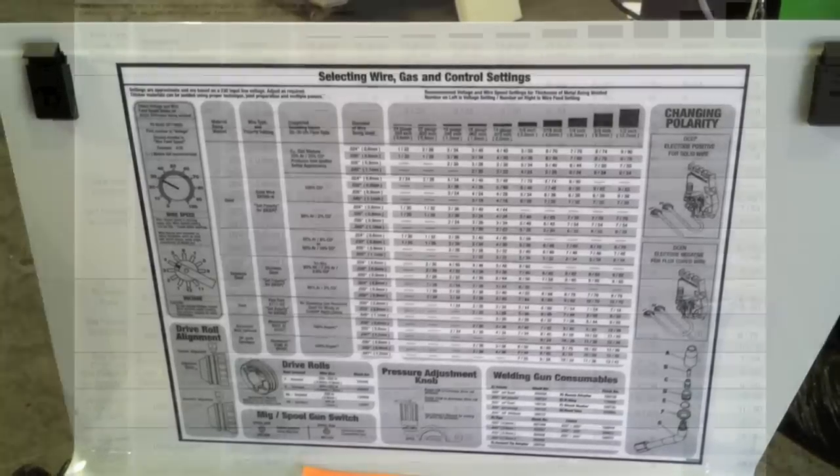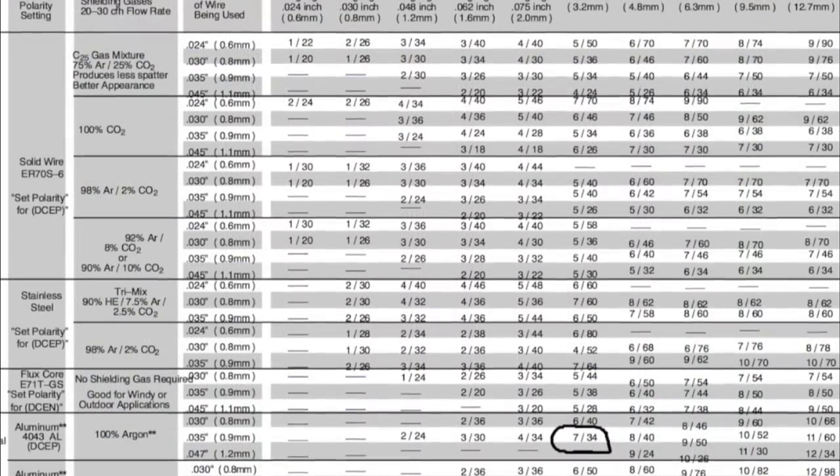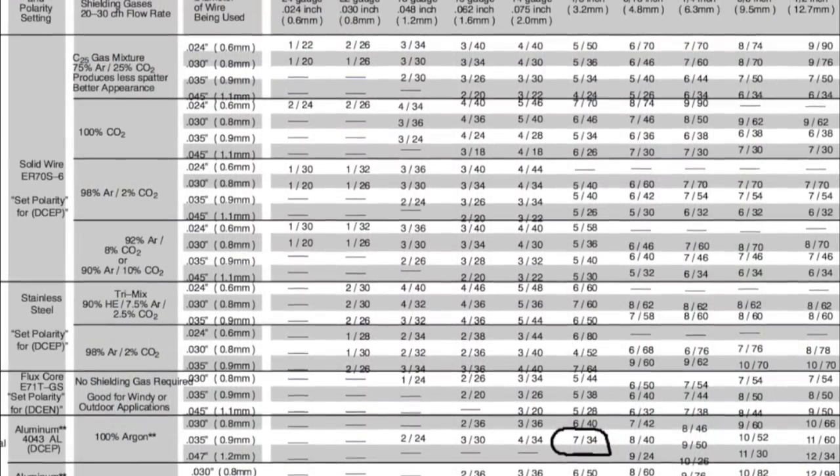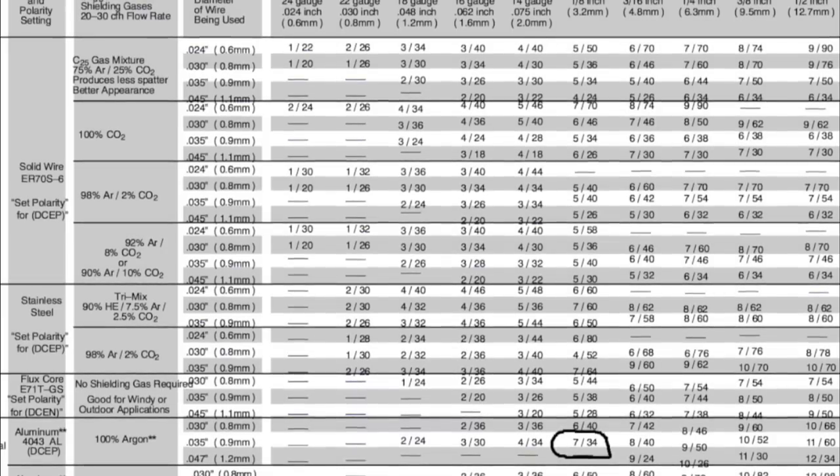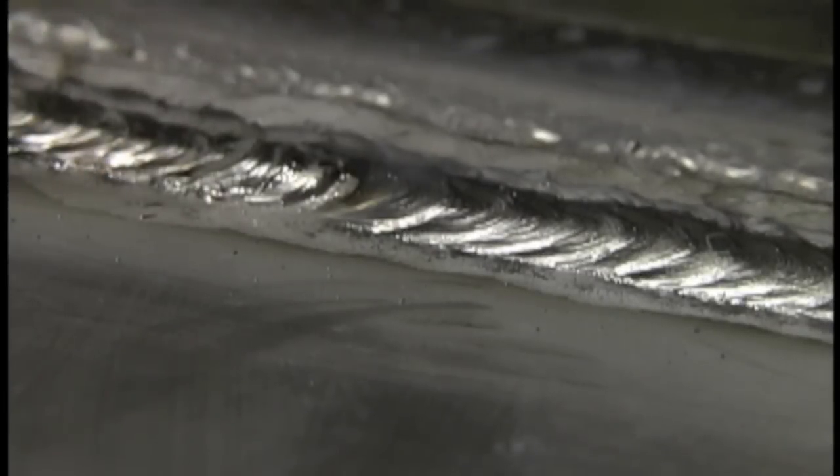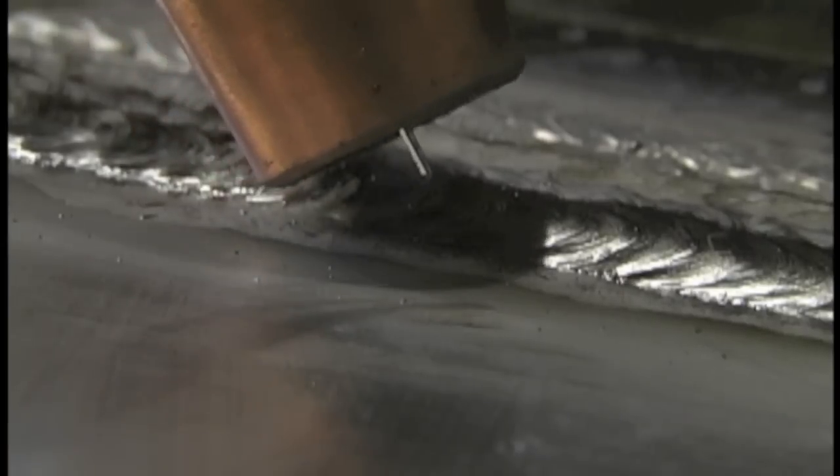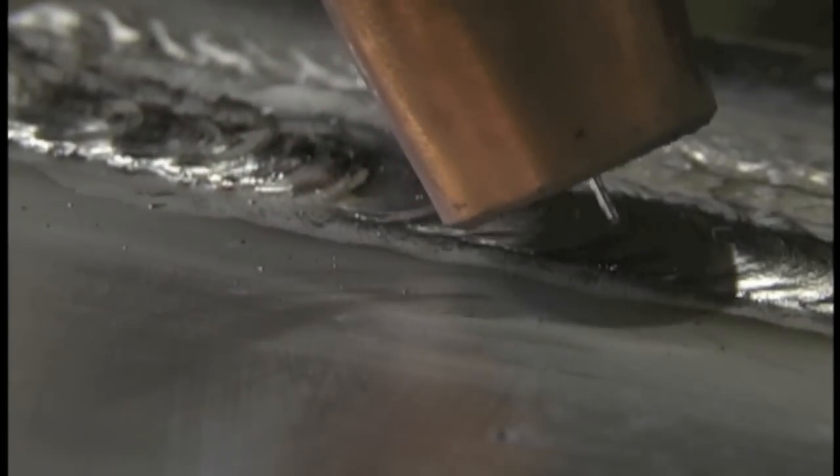But I'm going to use this chart here. It comes on the inside of the Iron Man, and the chart tells me 7 and 34, I believe, settings. Yeah, 7 on the voltage and 34 on the wire feed speed, and that's what I'm going to try. I just know from using this thing a little bit, that's going to be a little high, but that's where I'm going to start.